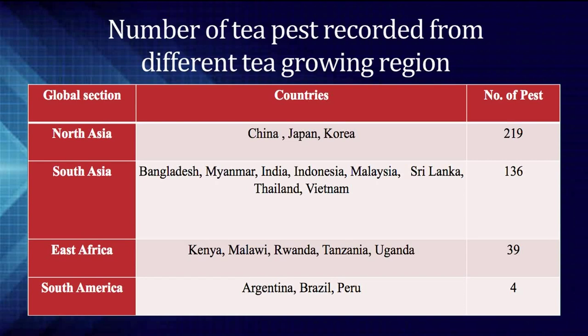The North Asian countries are China, Japan and Korea. The total number of pests recorded from this global section is 219. The next — 136 number of pests — are recorded from the South Asian section. This section includes countries like Bangladesh, Myanmar, India, Indonesia, Malaysia, Sri Lanka, Thailand and Vietnam.